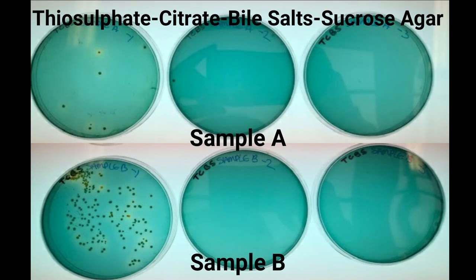For the TCBS agar plates, you should count the blue-green colonies only as these represent Vibrio parahaemolyticus. Taking into account the dilution factors, calculate the total number of bacteria and the total number of Vibrio parahaemolyticus per gram of shrimp for Samples A and B.